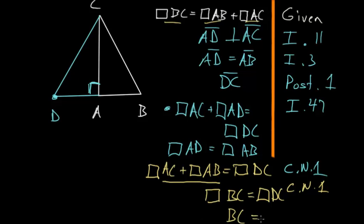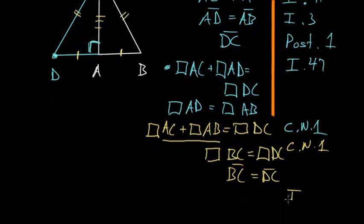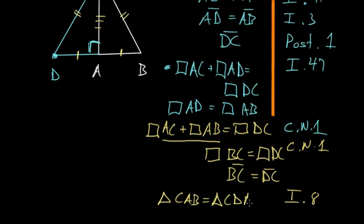Now looking at our triangles: AD and AB are equal, we just showed CD and CB are equal, and they also share the third side AC in common. So we can use Book 1, Proposition 8 — essentially the side-side-side theorem for triangles. Therefore, triangle CAB is congruent to triangle CDA.